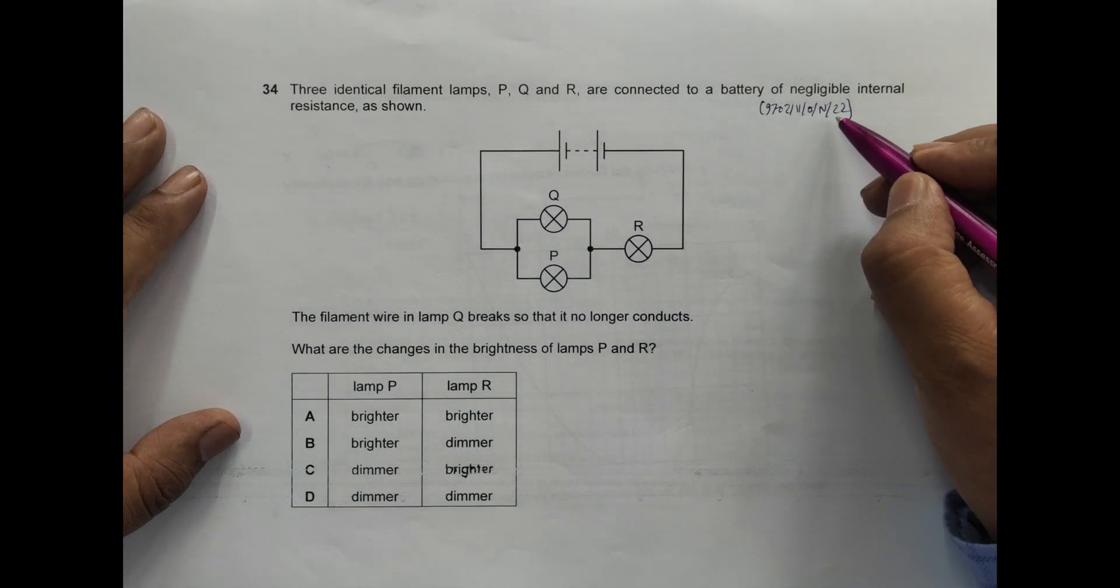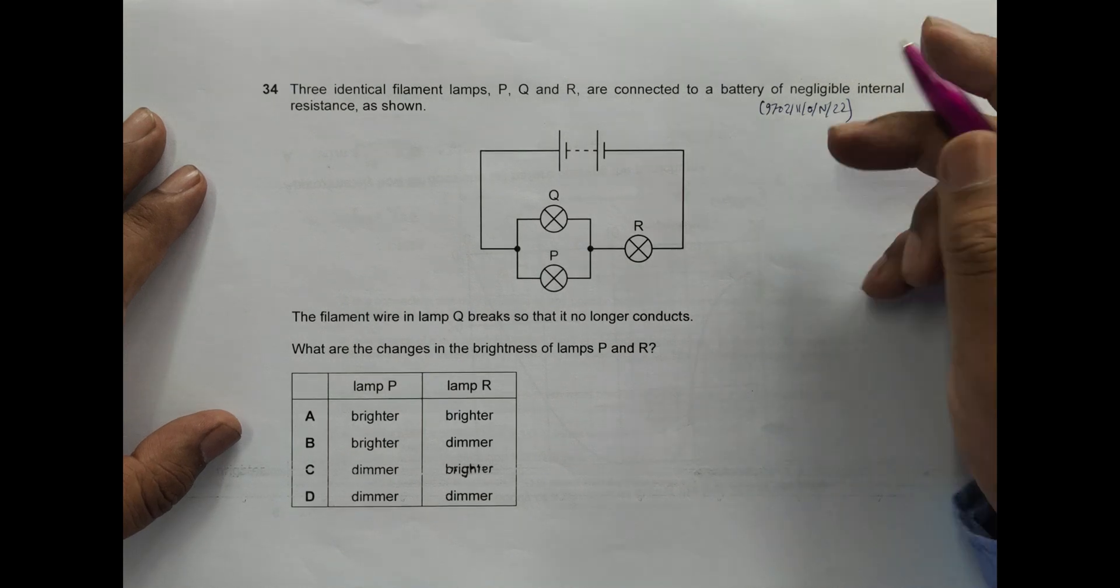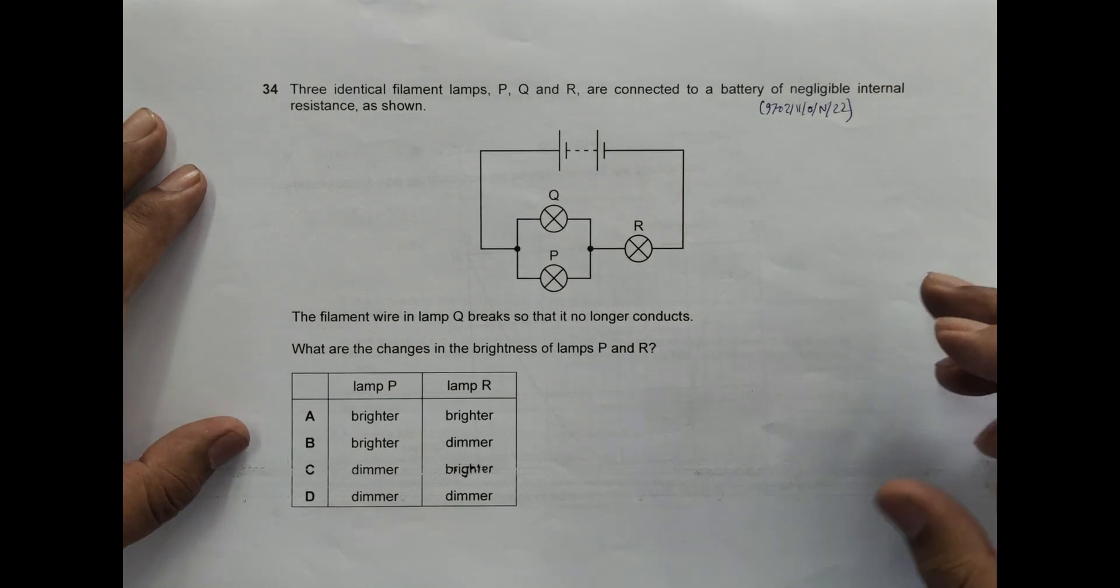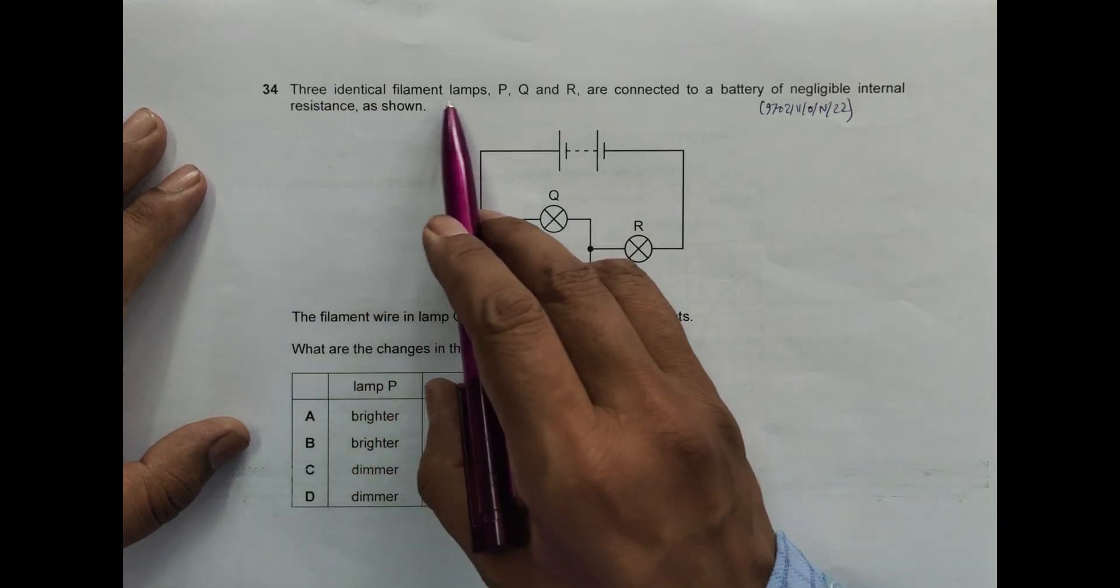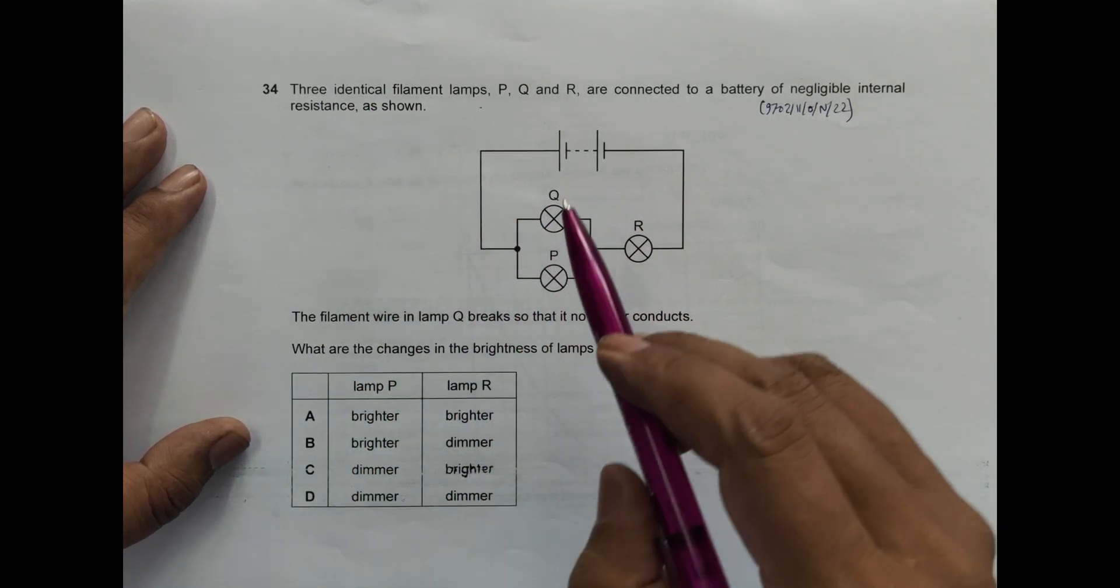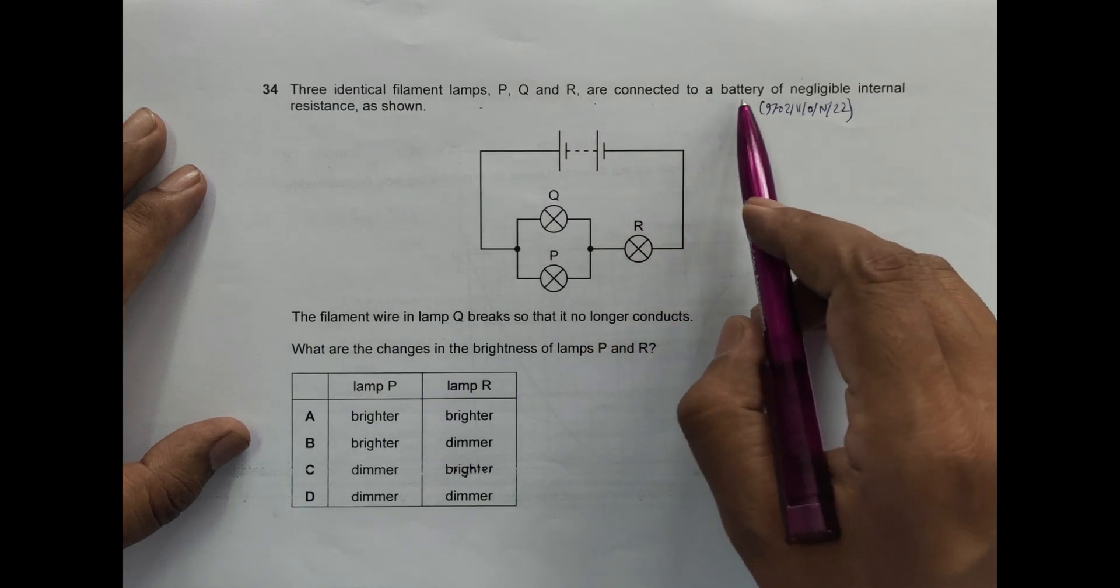Hello folks, this is 2022 October November paper one question number 34. The question is concerned with the chapter current electricity. It says three identical filament lamps, that means their resistances are same, are connected to